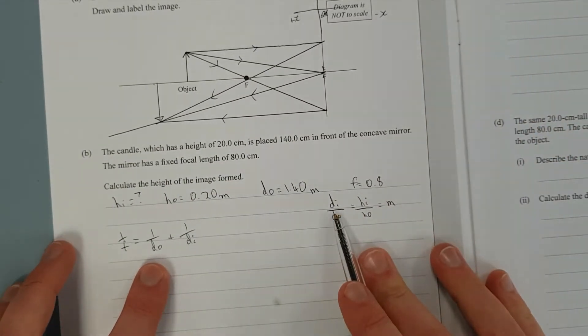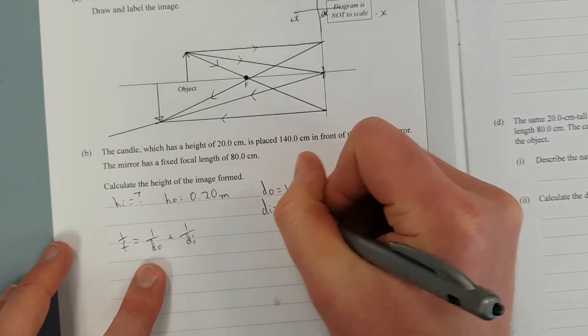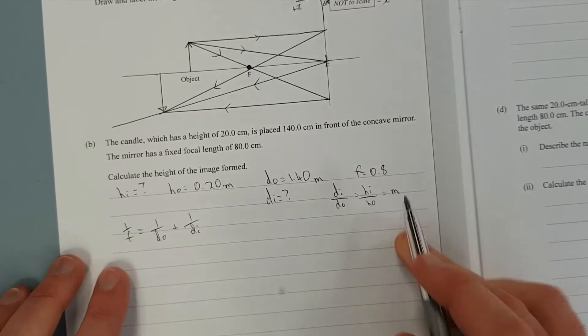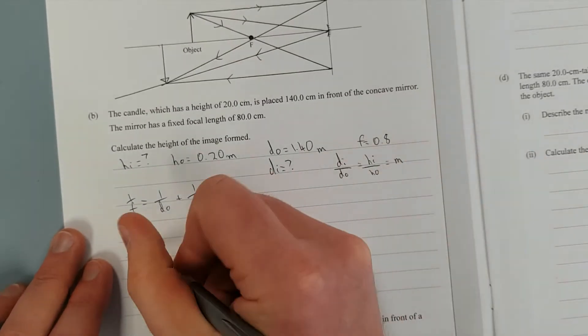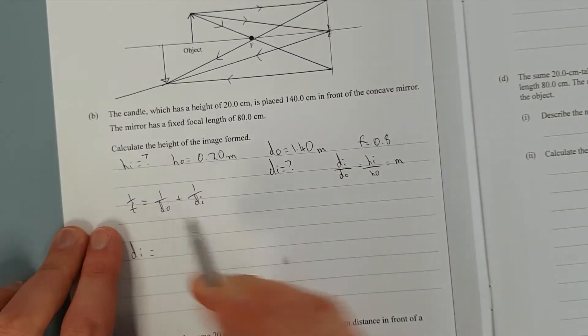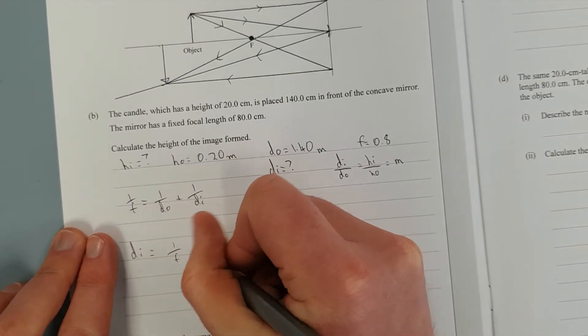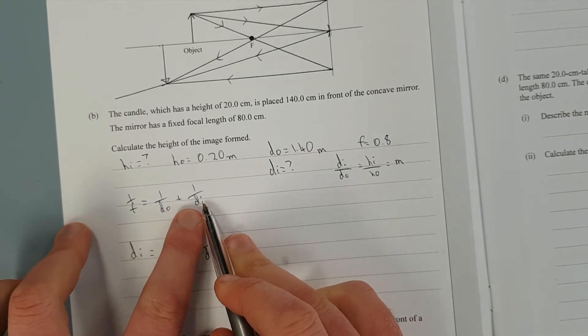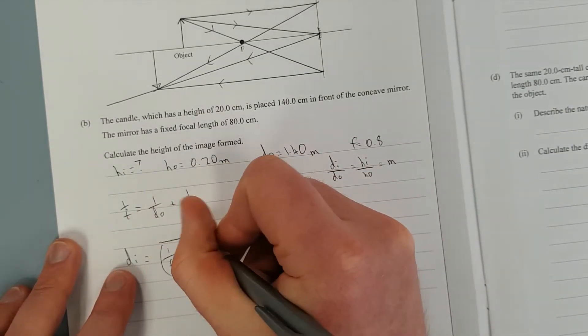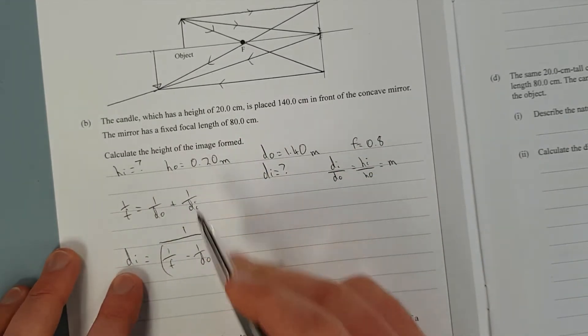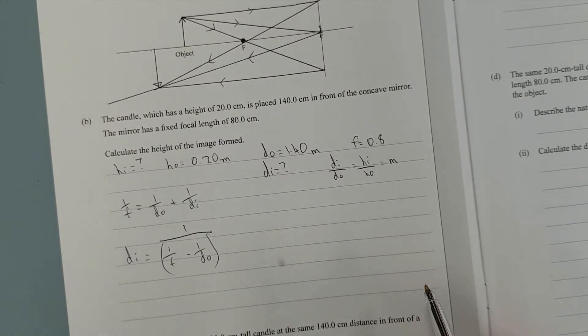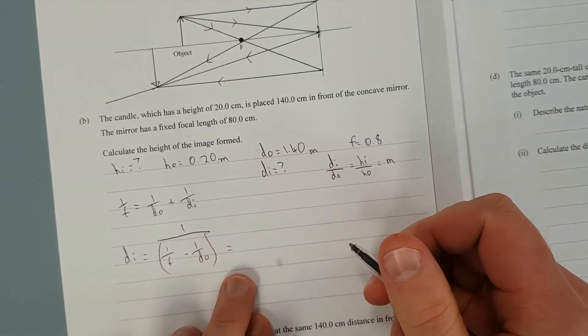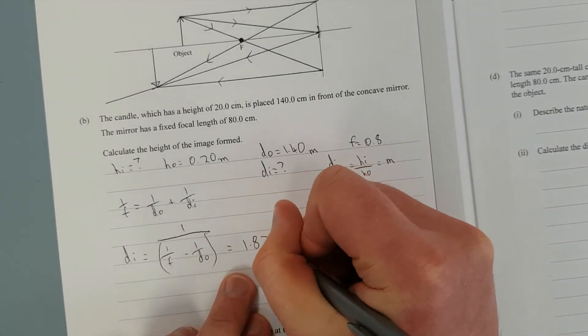So for this question, just so happens everything will be positive. So now we need to find DI. We need to rearrange. DI is equal to, remove that DO over to the other side. So we go 1 over F minus 1 over DO in brackets, to the power negative one to invert it. That once you plug it into the calculator gives you 1.87 meters.